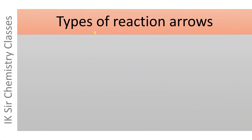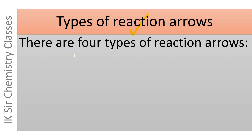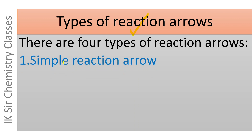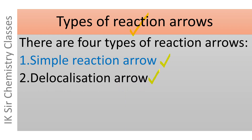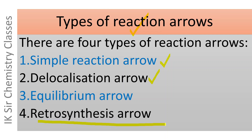Let us start our discussion with types of reaction arrows. There are four types of reaction arrows: the first one is simple reaction arrow, the second is delocalization arrow, the third is equilibrium arrow, and the fourth is called retrosynthesis arrow. These four types are frequently used in chemical reactions, especially organic reactions. We will discuss them one by one with suitable examples.